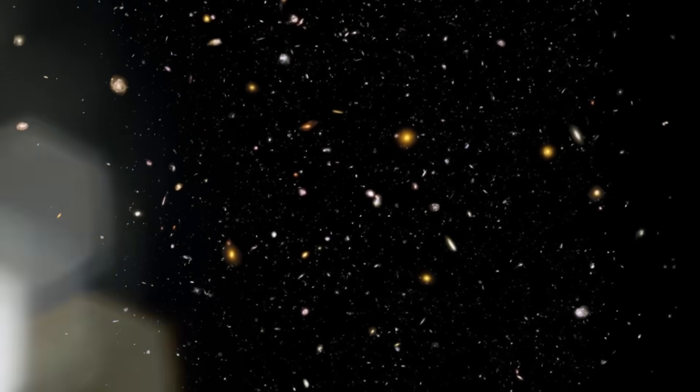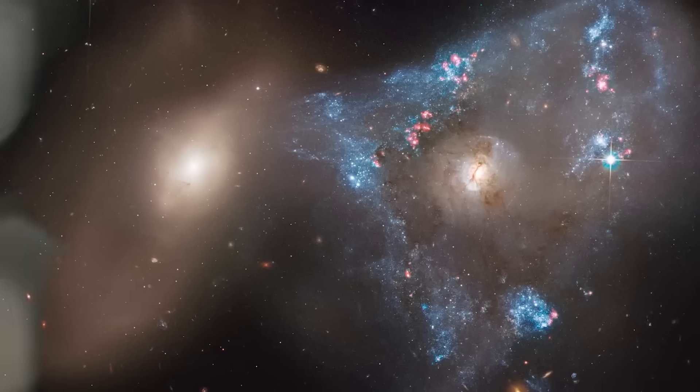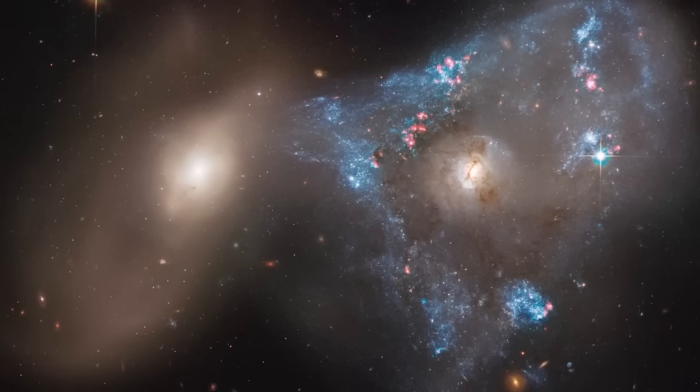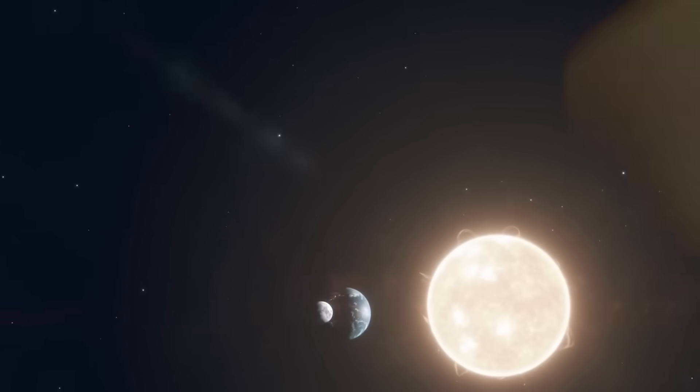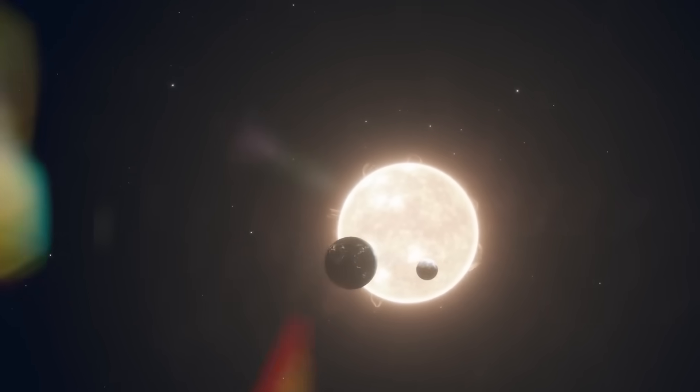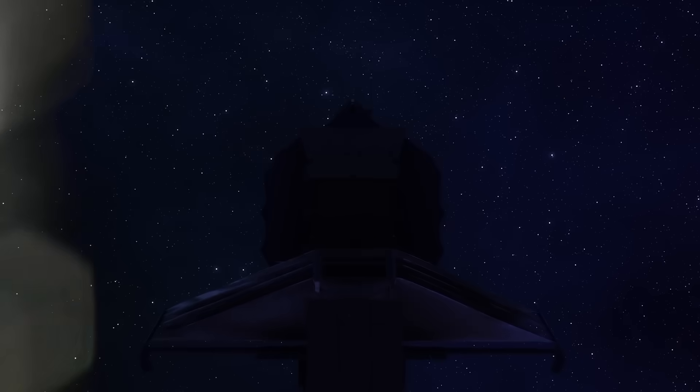And yet, this galaxy wasn't a flickering, half-formed cloud of primordial dust. It was a giant, with stars already fully formed and organized in complex structures. In other words, it didn't just exist. It had evolved. That's like finding an adult human in a newborn's crib. It simply shouldn't be possible.